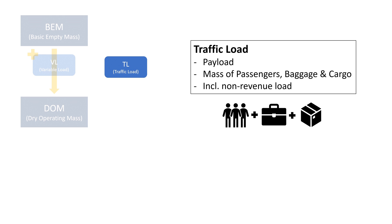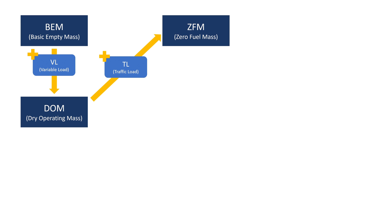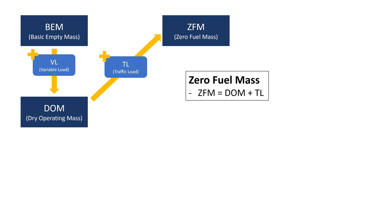If we add the traffic load to the dry operating mass, the result is the so-called zero fuel mass. It's pretty self-explanatory: the mass of the aircraft with zero usable fuel on board.